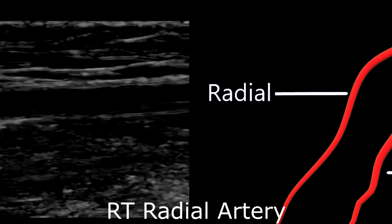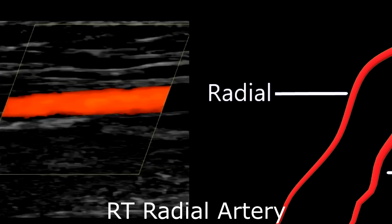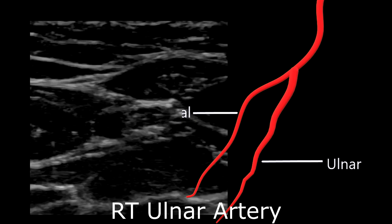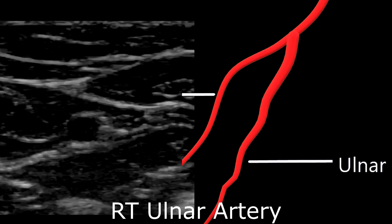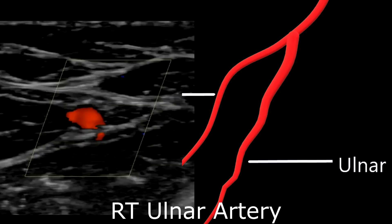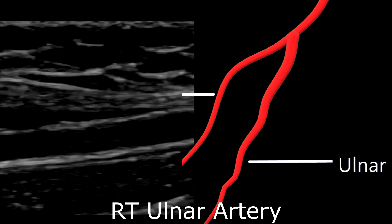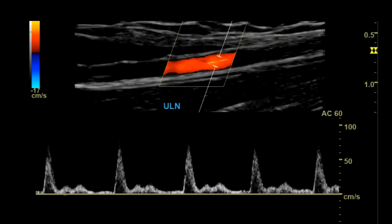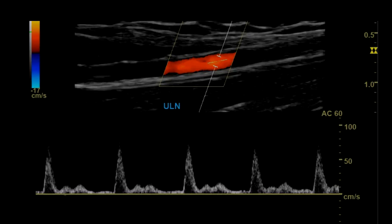Then sagittal with and without color, then spectral Doppler, followed by the ulnar artery: transverse with and without color, sagittal with and without color, and spectral Doppler. And that is your basic upper extremity arterial protocol. This exam can be performed unilaterally or bilaterally. In the next video, I will be going over the lower extremity.